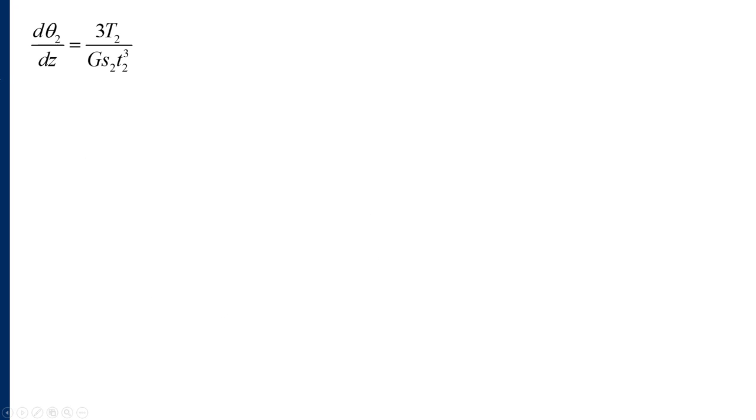Now we want to calculate the angle of twist so we'll do it for section 2. d𝜃2/dz equals 3·T2 divided by G·s2·t2³. I'll now convert everything to base units: 3 times 3.5 newtons per meter divided by 28×10⁹ pascals times 0.02 meters times 0.002 meters to the power of 3. If I simplify that I will get a value of 2.3 radians per meter which is 134 degrees per meter.